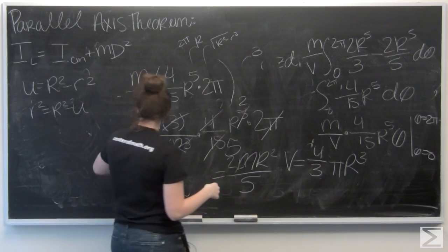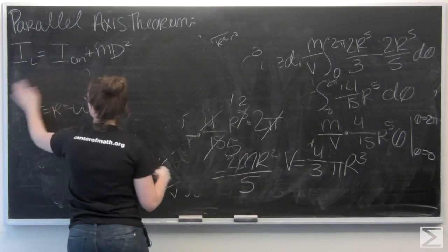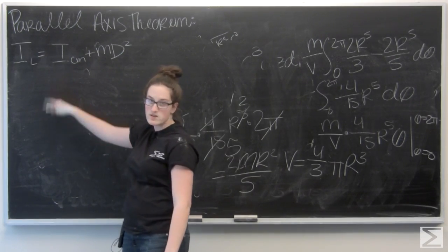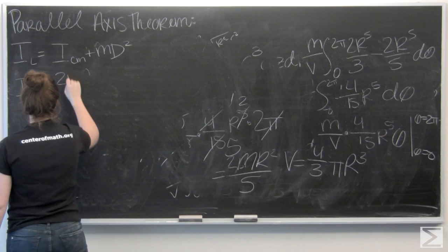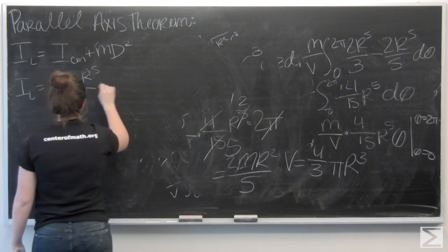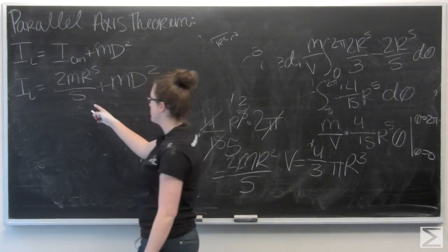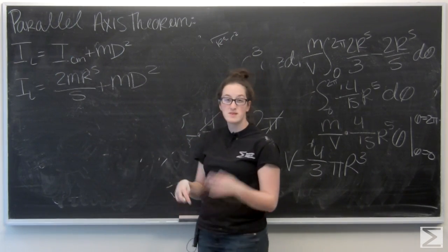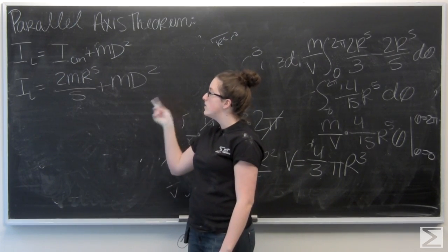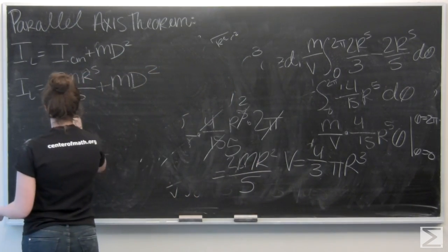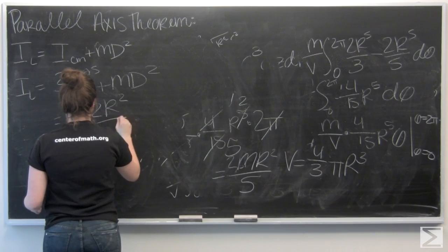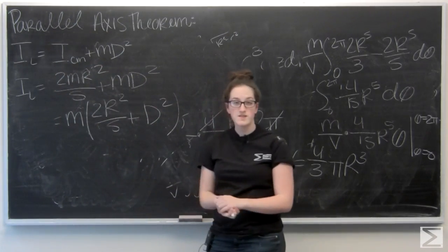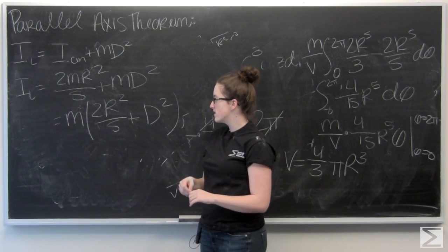Now let's take this back to the parallel axis theorem. That 2MR²/5 is the moment of inertia through the center of mass. Plugging it in: I don't have like terms to combine, and we're not given a specific distance for d, so d stays as a variable. But I can factor out M. So my final moment of inertia is I = M(2R²/5 + d²).